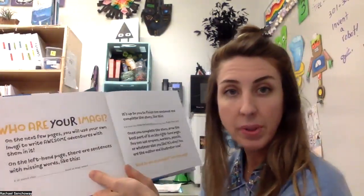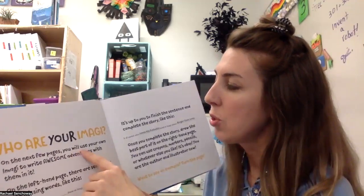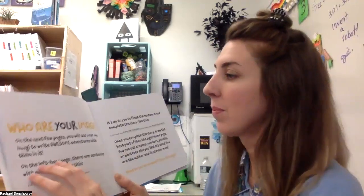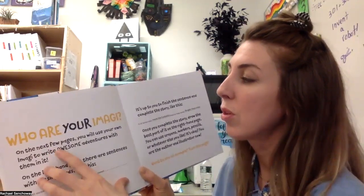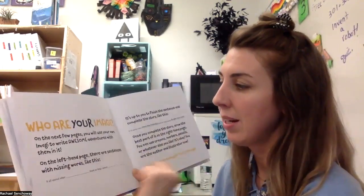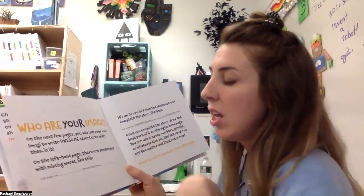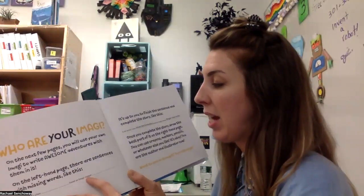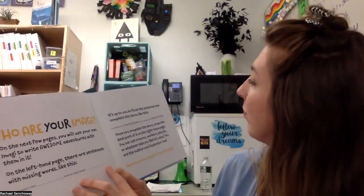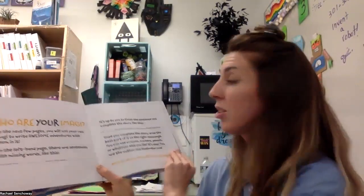Now the book is asking us: who are your imagi? On the next few pages, you will use your own imagi, meaning your own imaginary friends. The imagi are going to help you to write an awesome adventure with them in it. On the left-hand page, there are some sentences with missing words, like: it all started when? And then you're going to put your name, and right here it says, found an imagi named — and then you're going to put the name of your imagi. It's up to you to finish these sentences and complete the story.